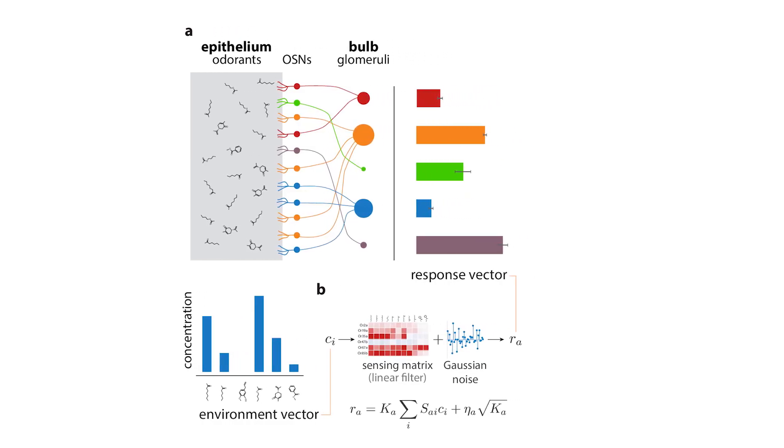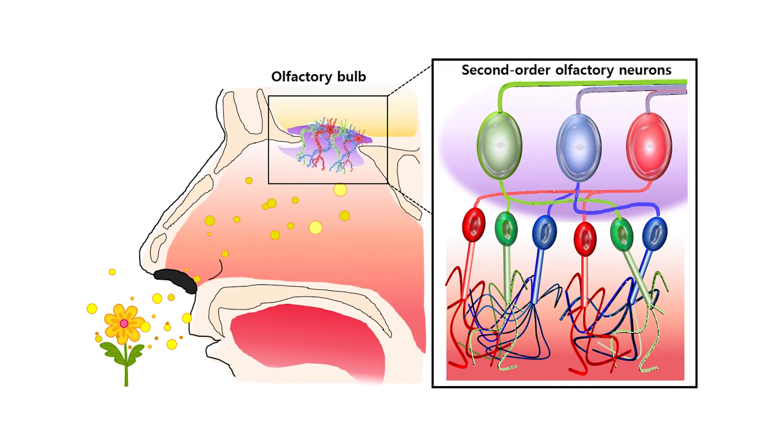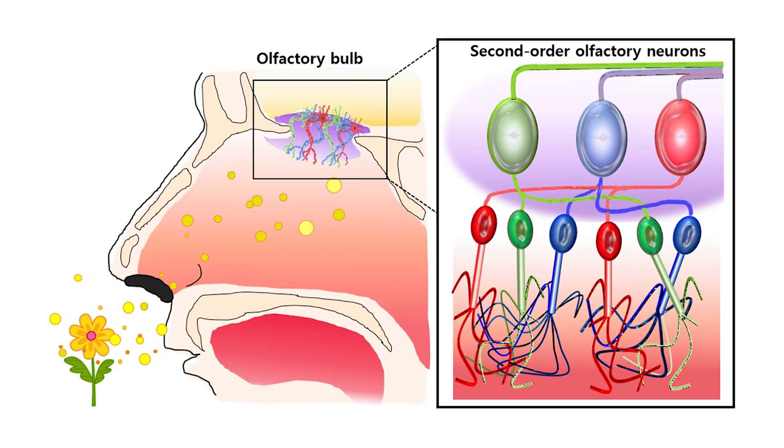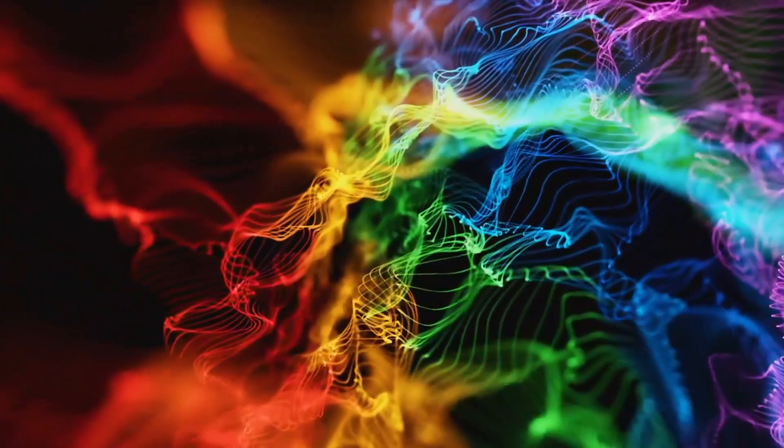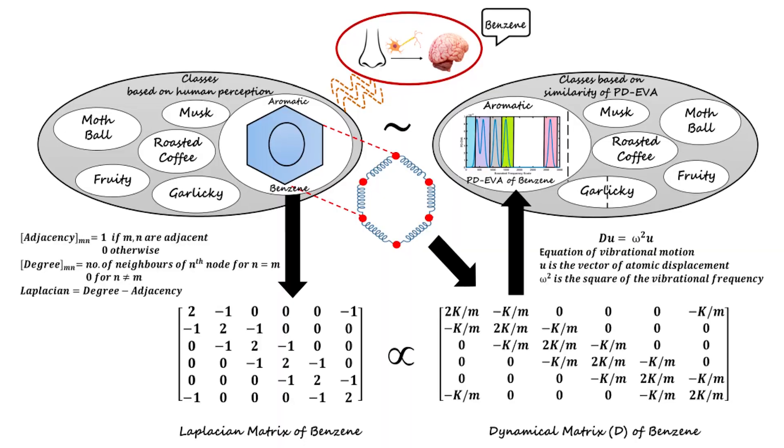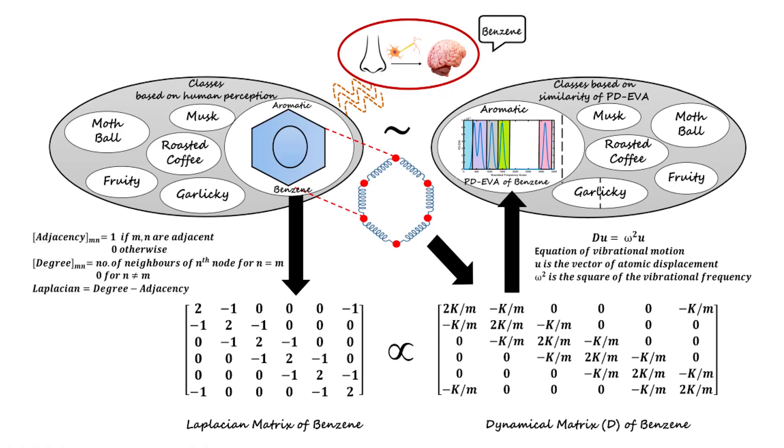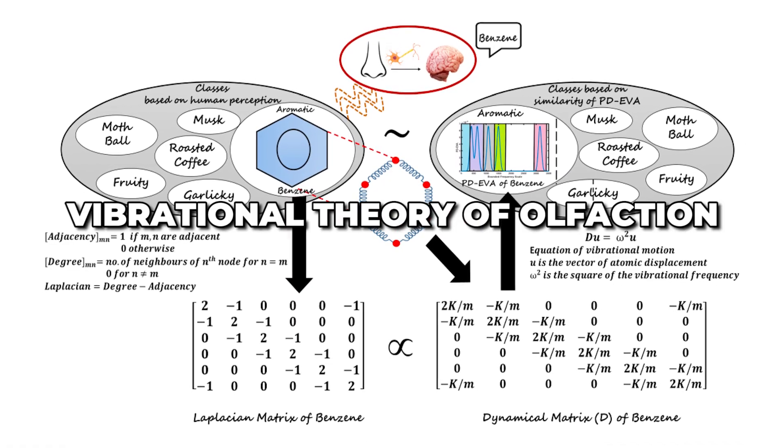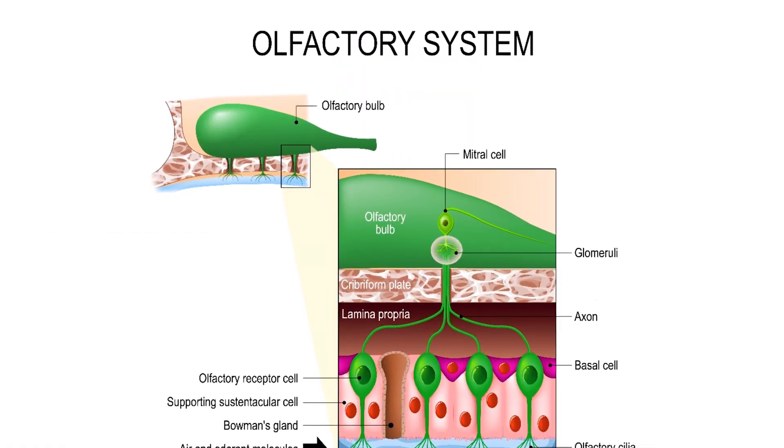The conventional lock-and-key model of smell suggests that odorant molecules fit into receptors based on their shape. However, this doesn't fully explain why molecules with identical shapes can smell different, while differently shaped molecules can smell the same. In 1996, Luca Turin proposed a controversial alternative, the vibrational theory of olfaction.